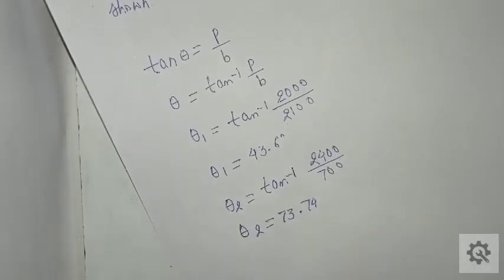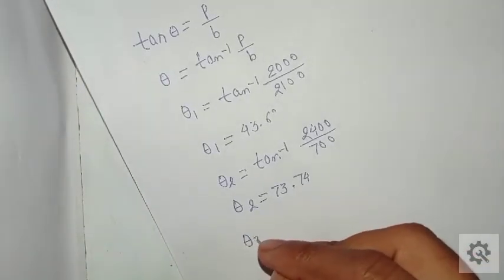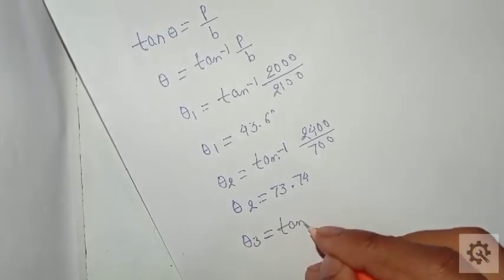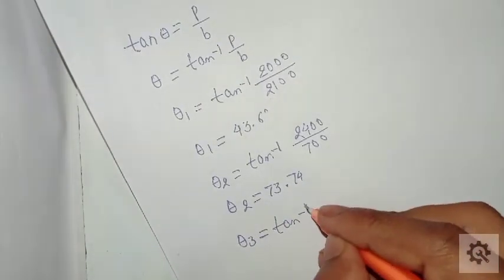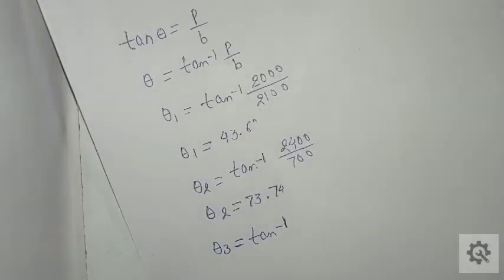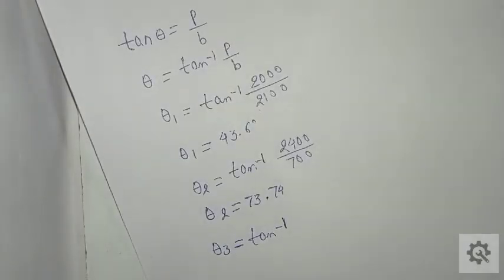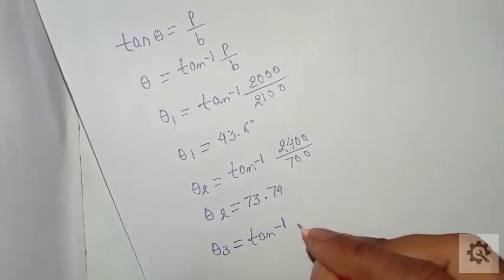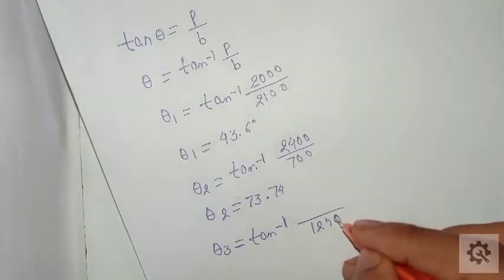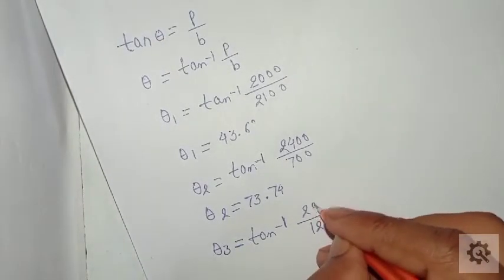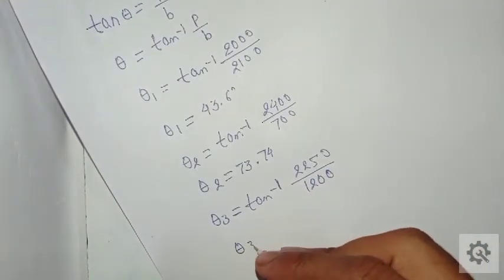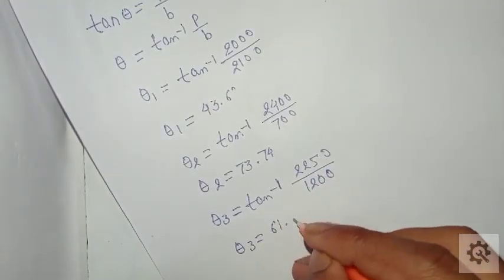Now let us find the value for force 225 Newton. I have assumed the angle as theta three, so theta three equals tan inverse. We have base as 1200 and perpendicular as 2250, so the value of theta three is 61.92 degrees.